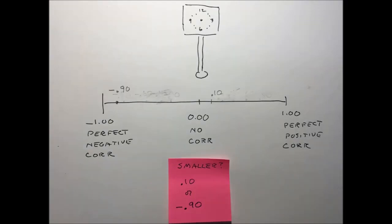You should be able to see that the pendulum has swung much farther to minus 0.90 than it would to 0.10. So the smaller is 0.10. That's the smaller swing and it's the smaller correlation.